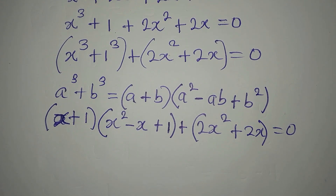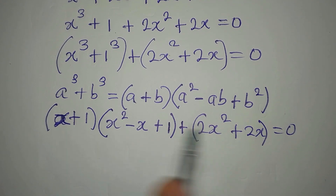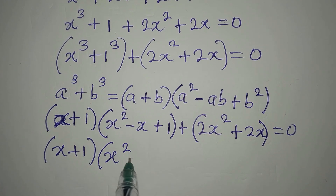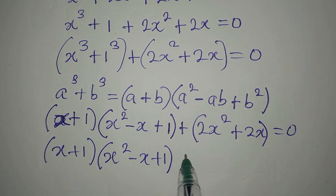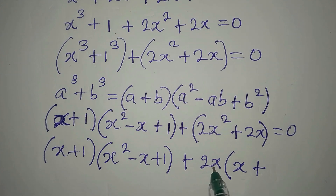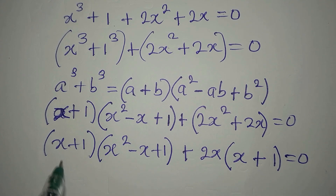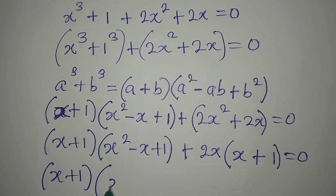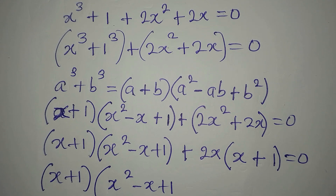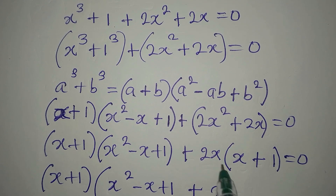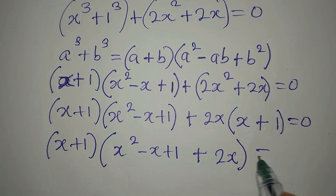Now our target is to pick out common terms from these groups. We write x plus 1, then here we have x squared minus x plus 1. Then 2x is common to the remaining terms, so we write 2x out, and x plus 1 divided by... 2x times 1 gives x plus 1. This is equal to 0. There is a common factor of x plus 1, so it comes out as the common factor.